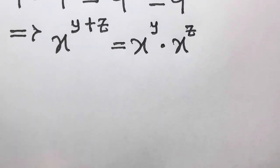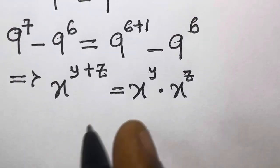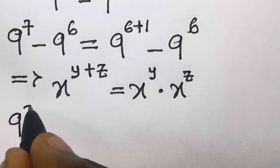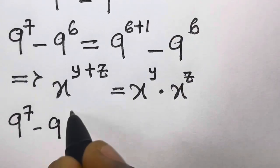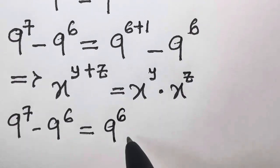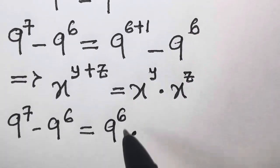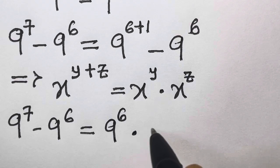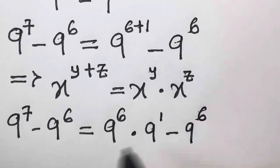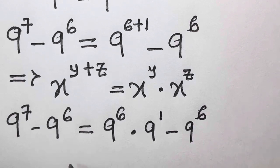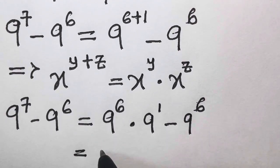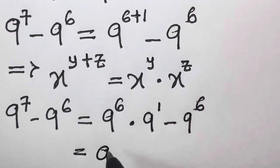So from here, if we apply this, we are going to have 9 raised to the power 7 minus 9 raised to the power 6 equals 9 raised to the power 6 times 9 raised to the power 1, minus 9 raised to the power 6. So then, 9 raised to the power 6 is common, so let's factorize 9 raised to the power 6 out.